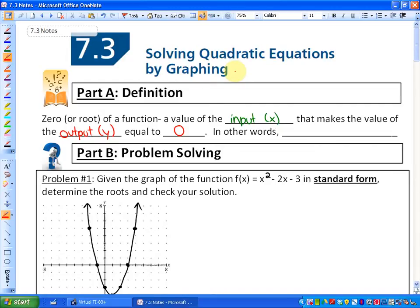First of all, we need to define a few words. One of those words is a zero or a root of a function, so they're synonymous. A zero or a root of a function is a value of the input, which is typically x, that makes the value of the output, which is typically y, equal to zero.